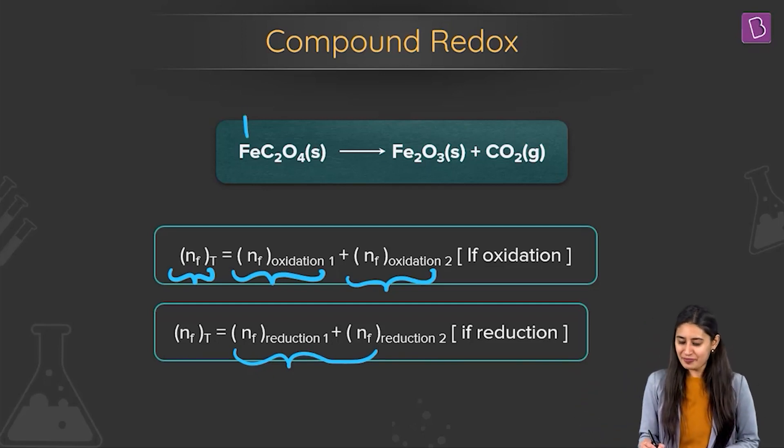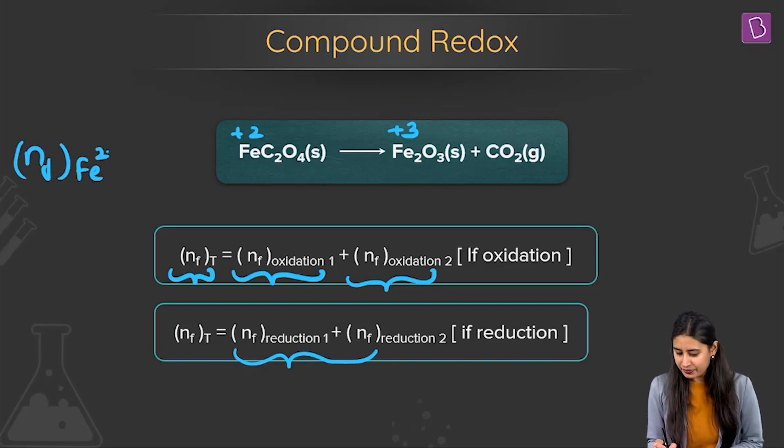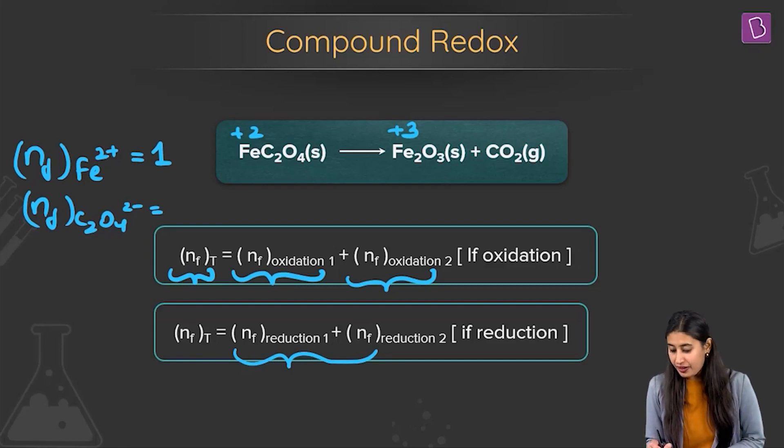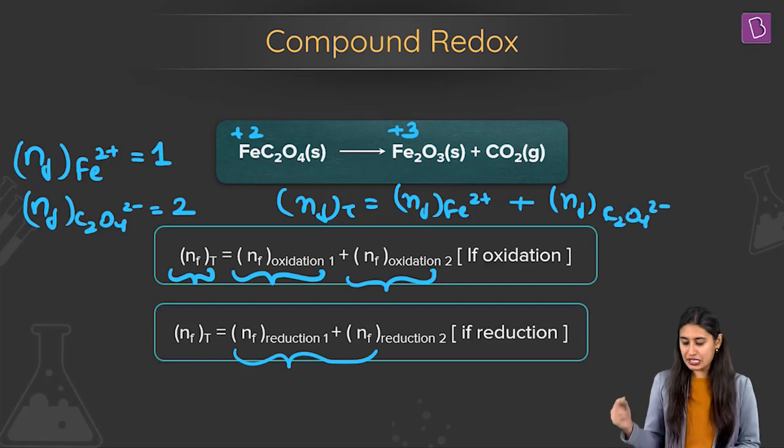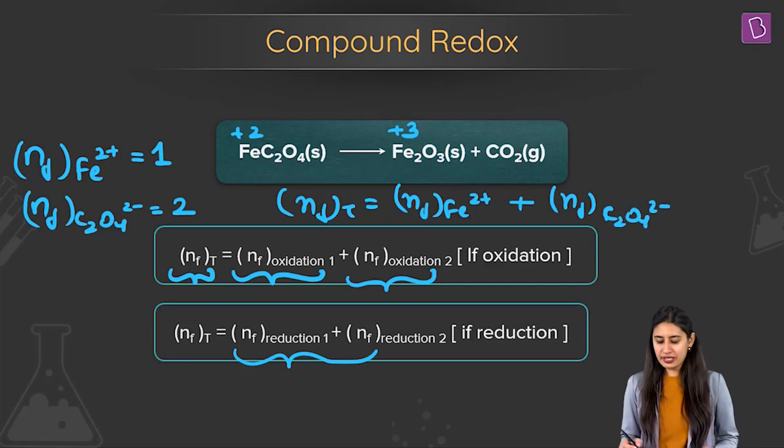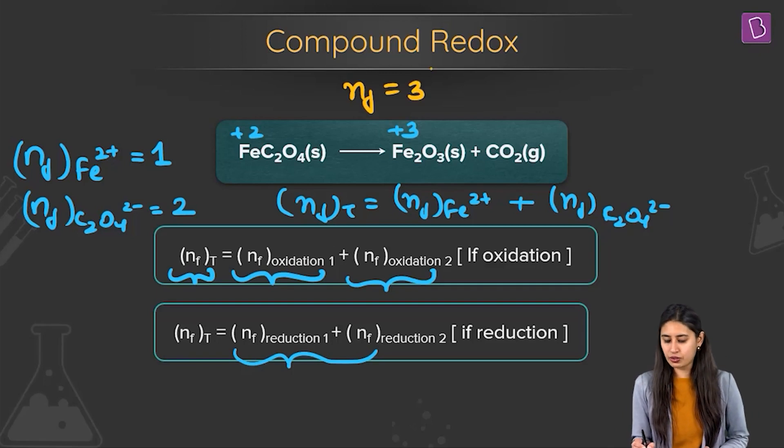So n-factor out here comes out to be, so from plus 2 to plus 3, n-factor of iron 2 plus is equal to 1. n-factor of oxalate iron, FeC2O4 2 minus is again, difference is 1 into the number of carbons are 2. So n-factor is 2. So n-factor total should be n-factor of iron 2 plus going to iron 3 plus and n-factor of oxalate which is going to CO2. So we get 1 plus 2, n-factor of this kind of a redox comes out to be 3.